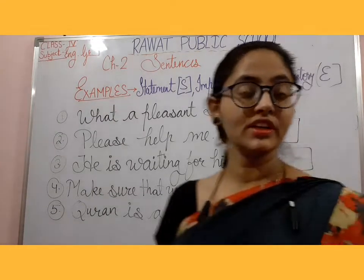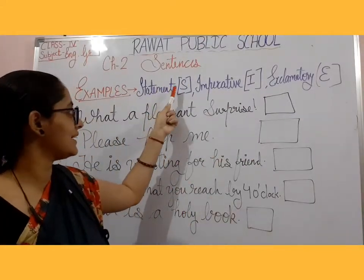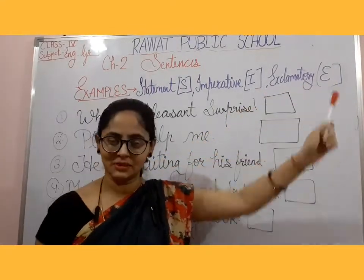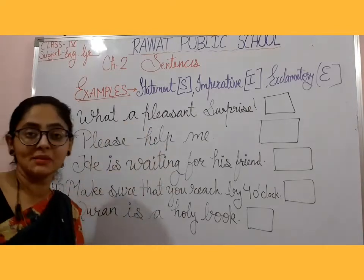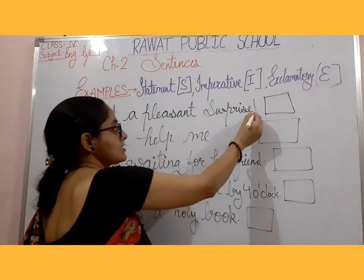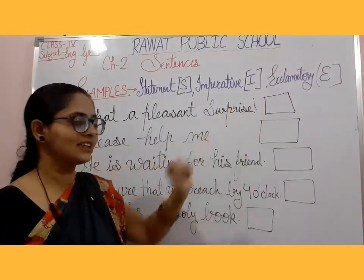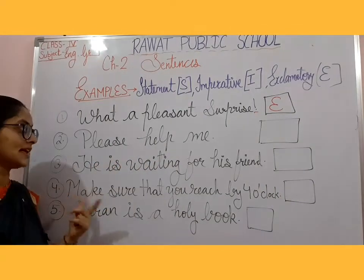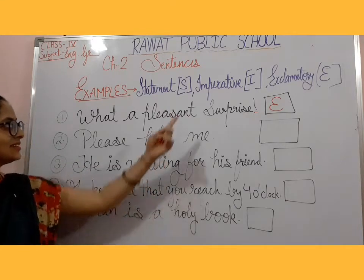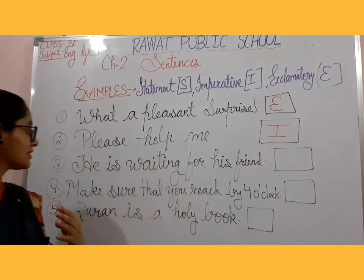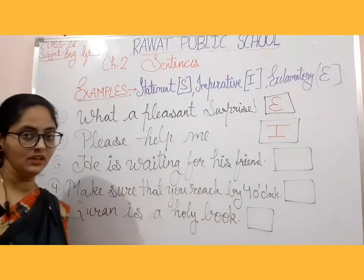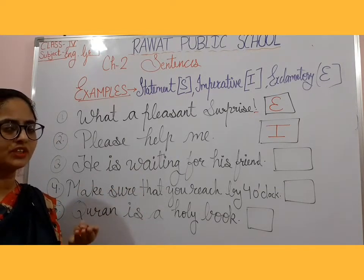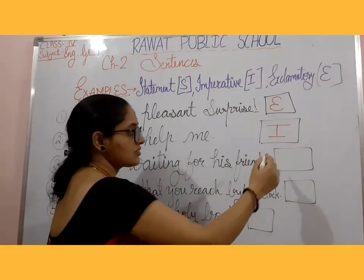Now let's look at five examples. We need to read each sentence and identify if it is a statement (S), imperative (I), or exclamatory (E). The first is 'What a pleasant surprise!' — it has an exclamatory mark and expresses feeling, so it is exclamatory (E). Second: 'Please help me' — 'please' indicates a request, so it is imperative (I). Third: 'He is waiting for his friend' — no request, command, or feeling, just a fact, so it is a statement (S).